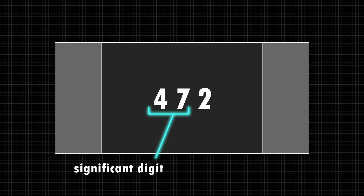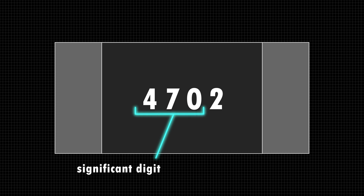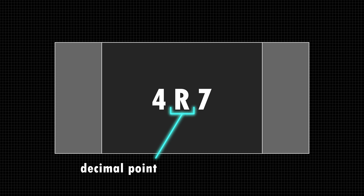In a three-digit code system, the first two digits are the value and the third one is the multiplier. In a four-digit system, the first three digits are the resistance value and the fourth one is the multiplier. For resistors that are smaller than 10 ohms, you will find the letter R indicating the decimal point.